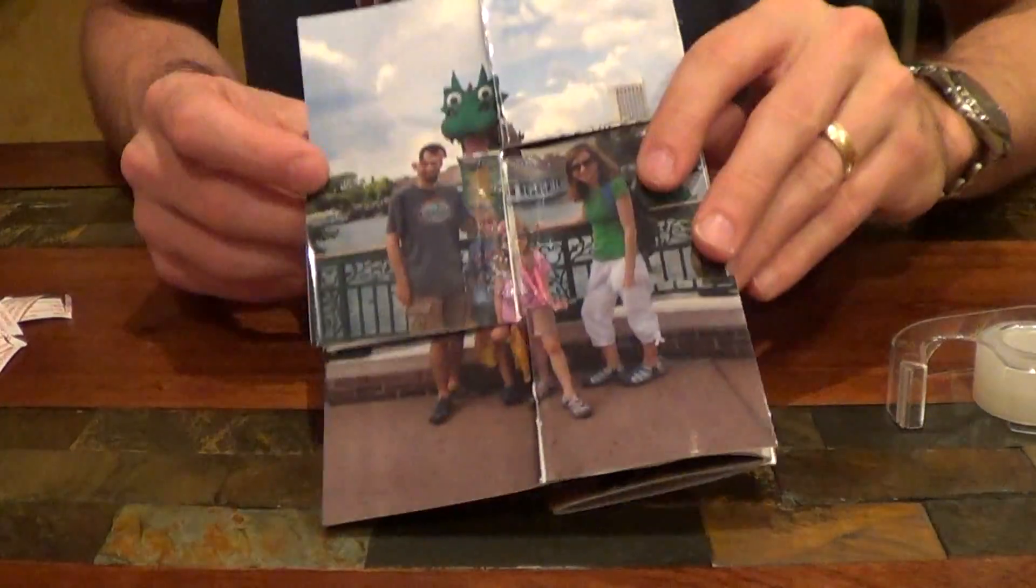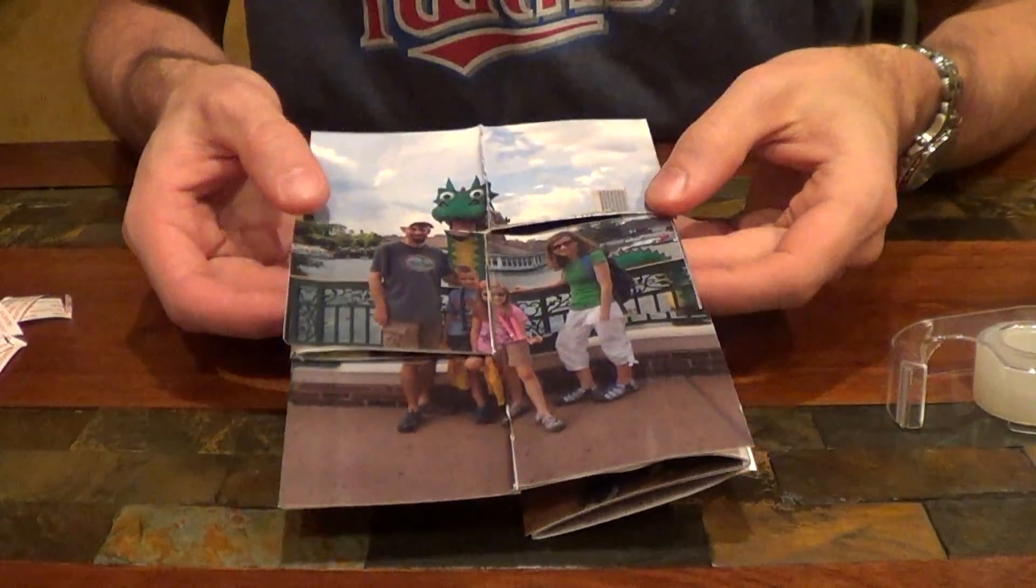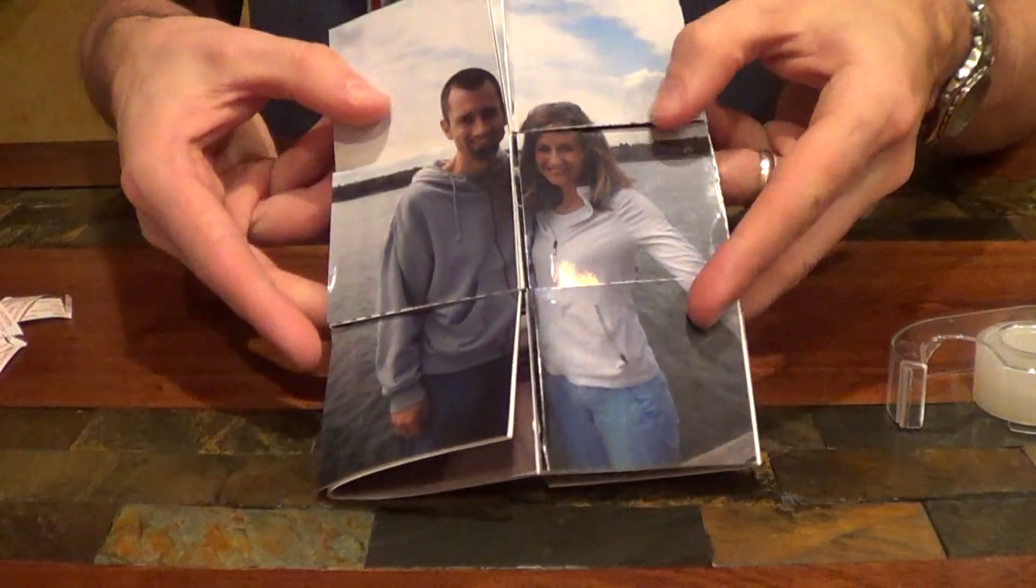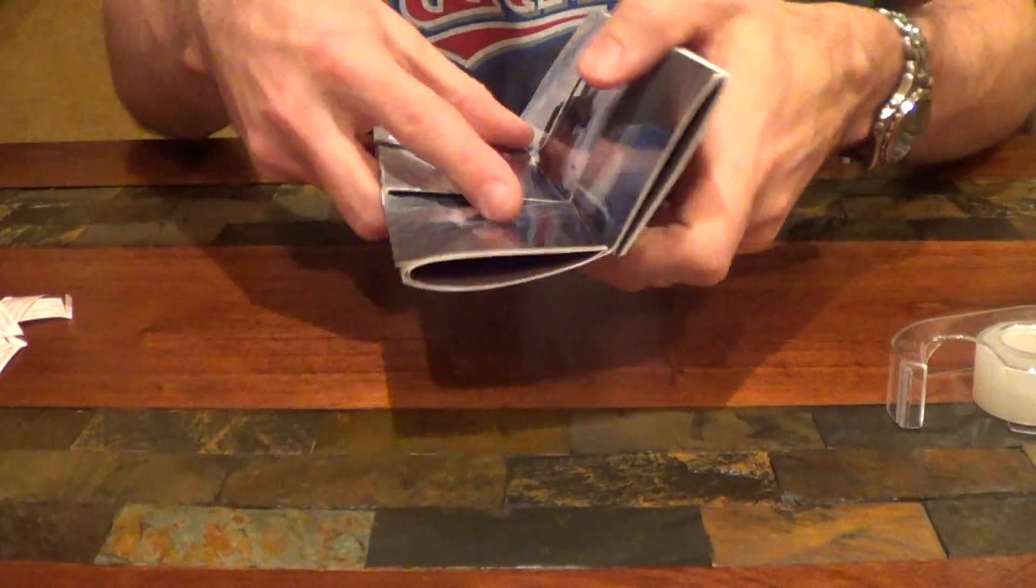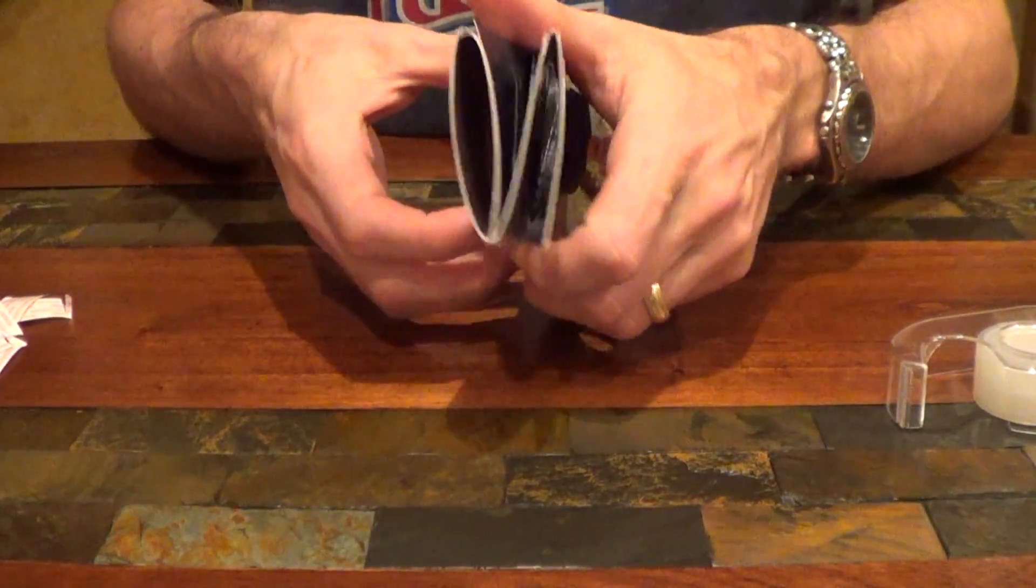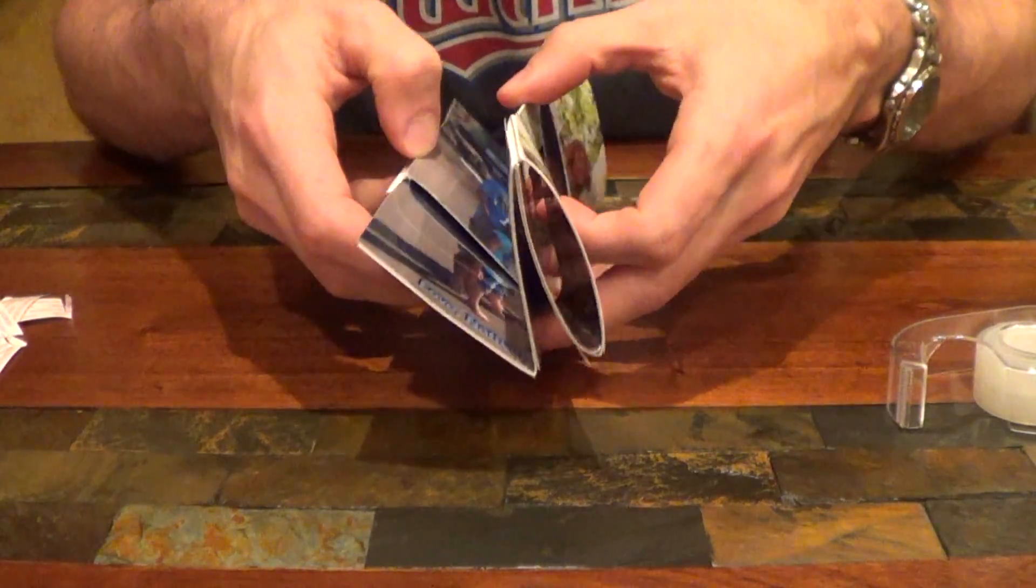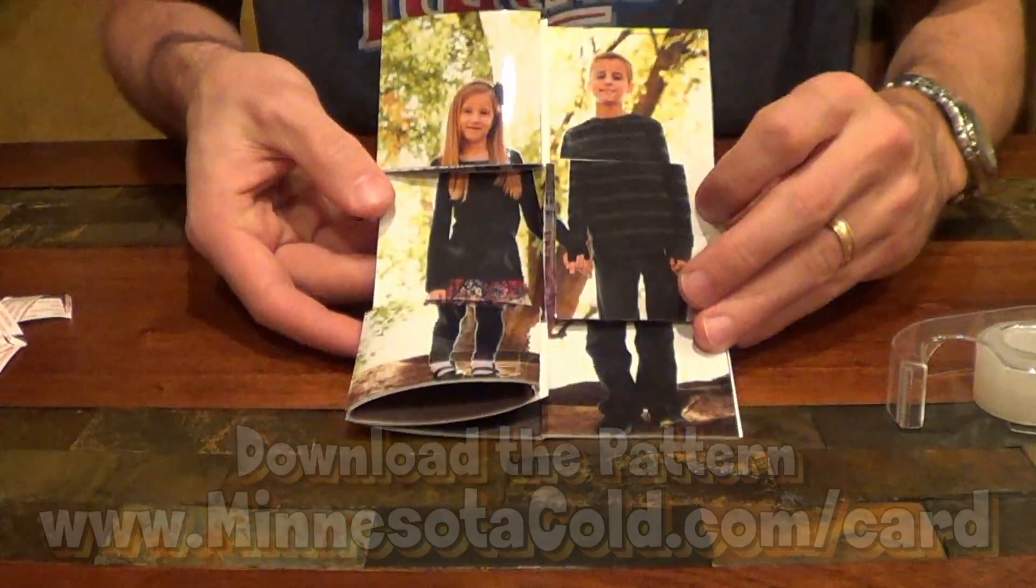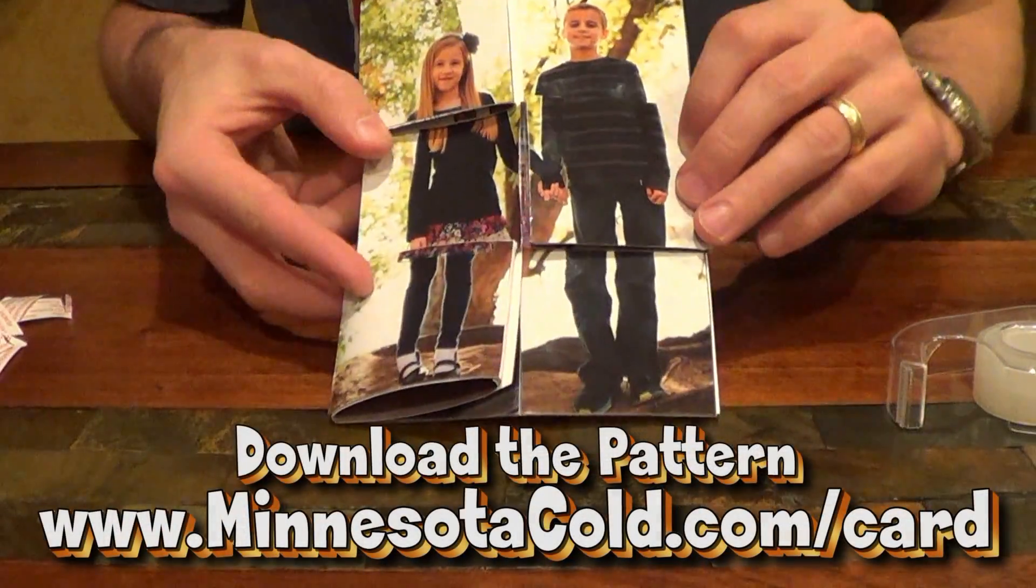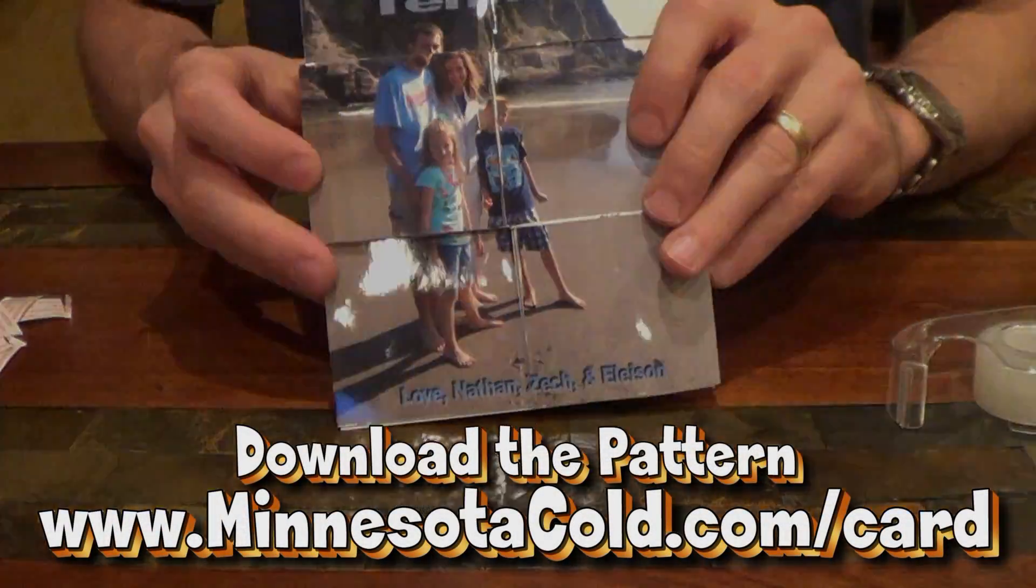Now that you've got picture four there, you can fold it to get picture number three. Fold it again. And again, it's a little bit trickier when you have the other actual pictures. And then there's picture number two and picture number one.